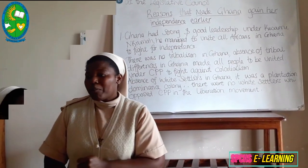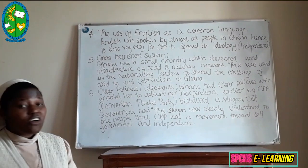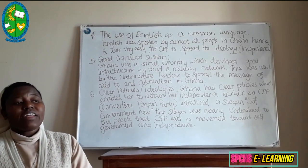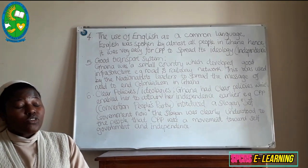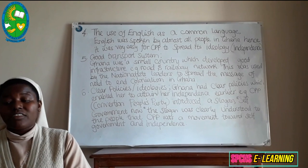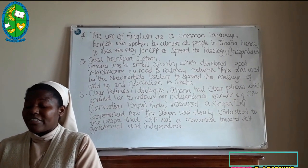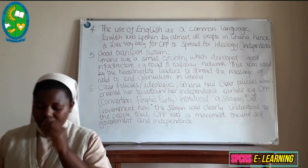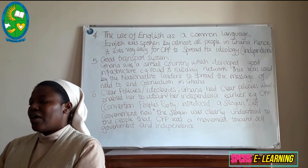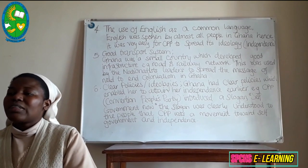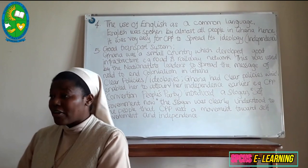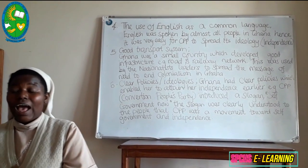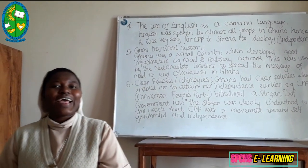The fourth point is that English was used as a common language in Ghana, spoken by nearly every Ghanaian. This enabled the CPP as a party to sell its policies, which were embraced by all Ghanaians, thus contributing to the acquisition of independence. The fifth point is that Ghana had a good transport system — a good transportation network and infrastructure such as railway and road networks — which enabled African nationalists to move around selling the party's policies, contributing to Ghana gaining independence earlier than Kenya, Uganda, and other African nations.